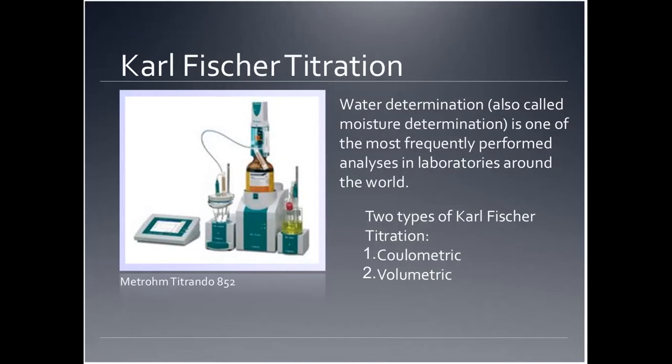Another great analytical instrument in our lab is the Karl Fischer titrator. The Karl Fischer titration is a universally acknowledged method for measuring water content or moisture determination in samples including chemicals, oils, pharmaceuticals, and food. Because water can affect product quality, texture, shelf life, stability, and reactivity, it must be readily tested to ensure it will not affect the efficacy of the product. The two types of Karl Fischer titration are coulometric and volumetric — coulometric is used for samples containing a small amount of water, while volumetric is used when there is a high concentration of water. We have one Karl Fischer titrator in our lab.